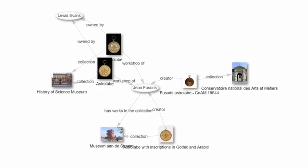You might want scientific instruments that were made in a particular place, or in a particular time, or made by people who were authors who wrote about them. It enables you to ask questions in a more precise way than you can do with search engines or searching an encyclopedia.